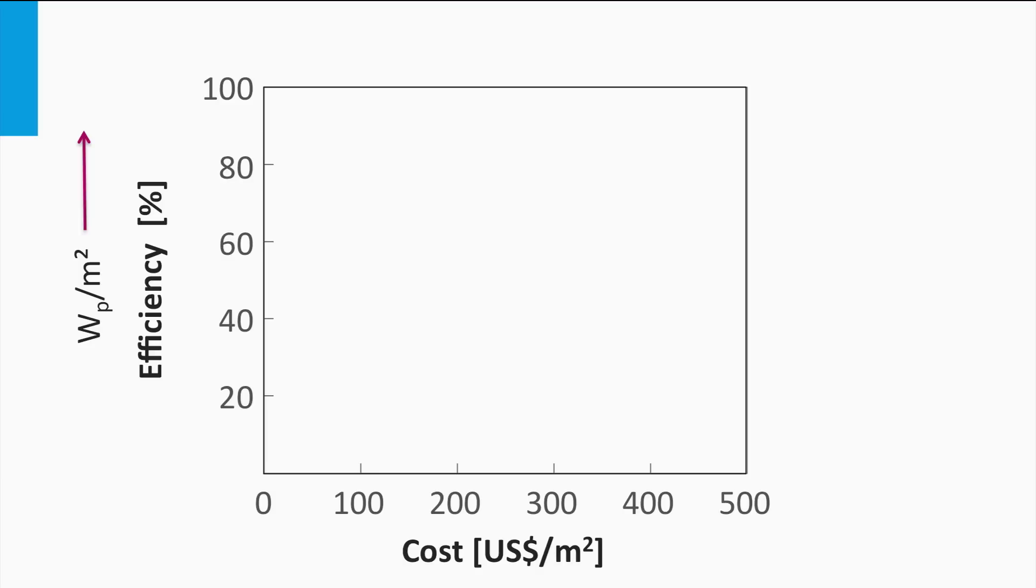For example, standard test conditions for solar cells means an irradiance of 1000 watts per square meter. This means a solar cell with conversion efficiency of 10 percent produces under standard test conditions a power output of 100 watts per square meter.